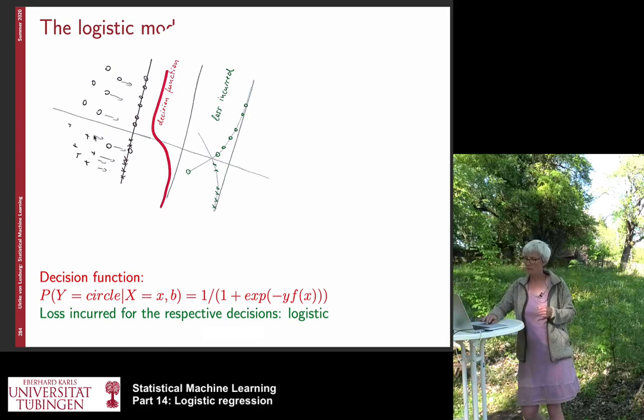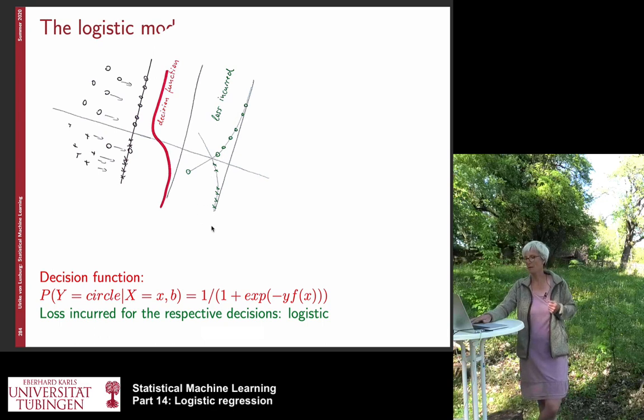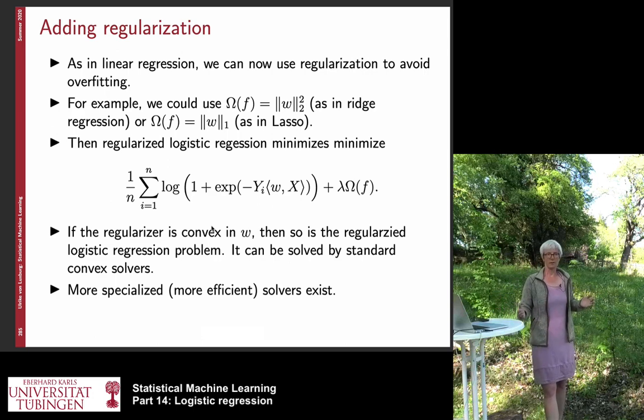This is more or less the same plot as we have before. So, here we have our data set. This is the decision function. Here we decide for class minus one, here we decide for class plus one. And this is what the loss would be that you would have depending on what you predict for these particular points.